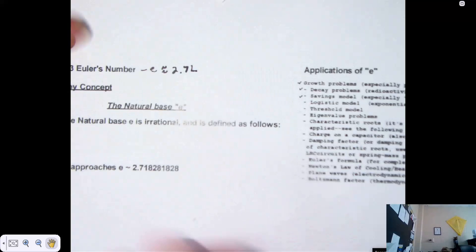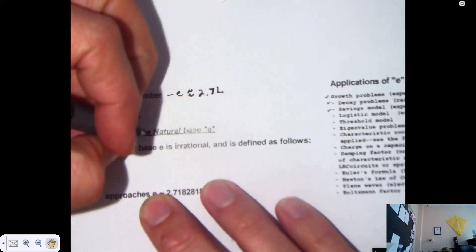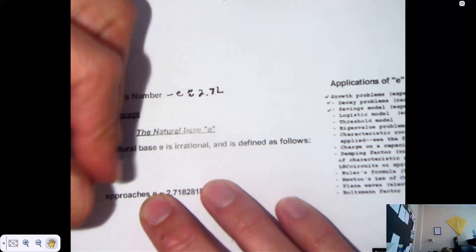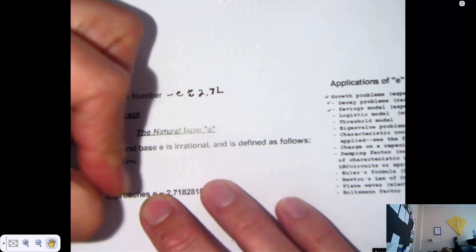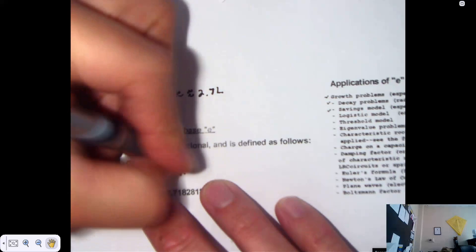It is irrational, which means that decimal continues forever. It is defined as follows in calculus. The number E is the limit as N approaches infinity of 1 plus 1 over N to the Nth power.